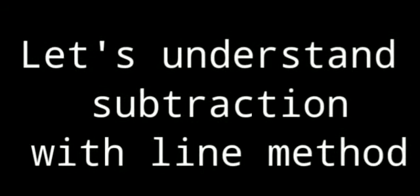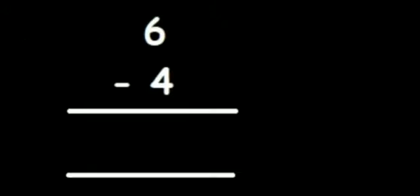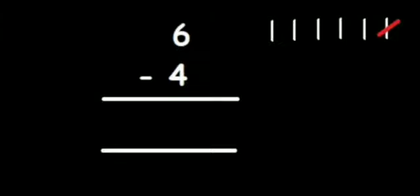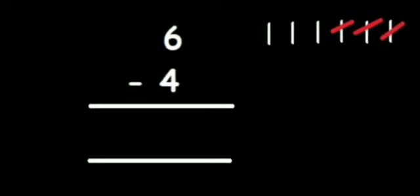Let's understand subtraction with the line method. Here we have to subtract four from six. We will draw six lines because we have to subtract from six. Then we will cut four lines — one, two, three, and four. So four lines are cut.